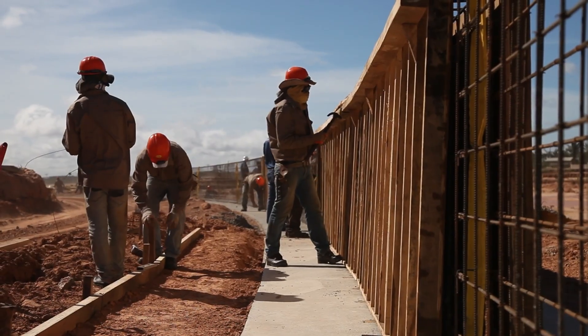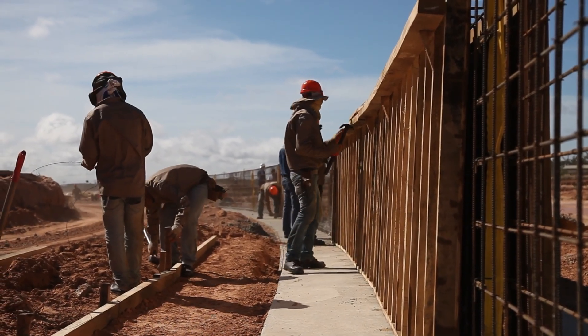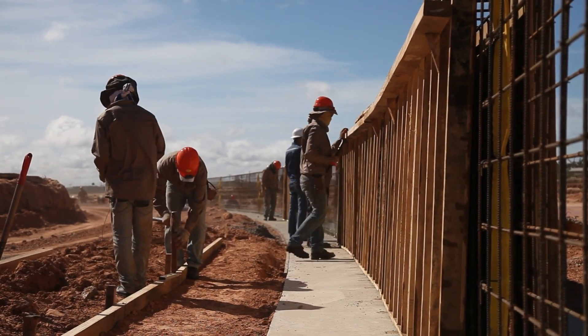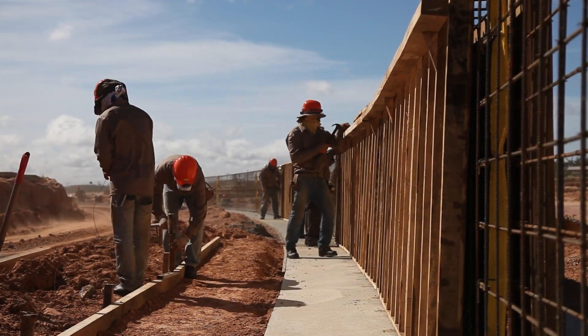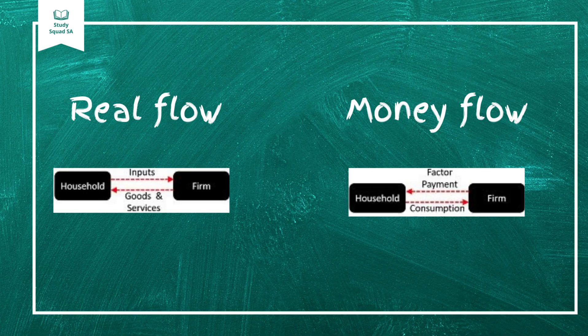Number two: the factor market. This is where factors of production like labor, land, and capital are traded. For example, when you work a job, you're participating in the factor market by selling your labor, and your salary is the payment you receive in return. In both markets, two flows happen simultaneously: the real flow involves goods, services, or factors of production moving between participants, while the monetary flow involves money moving in the opposite direction. When you buy a cup of coffee, the money you spend becomes income for the coffee shop, while the coffee becomes your product.